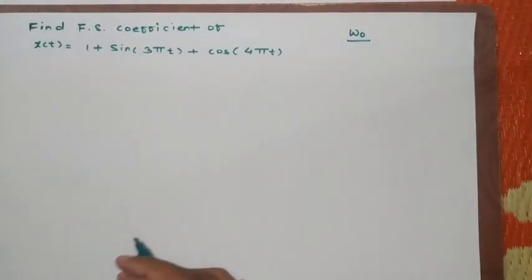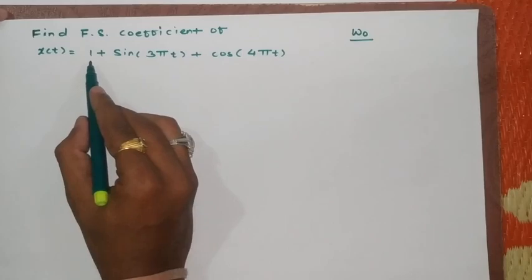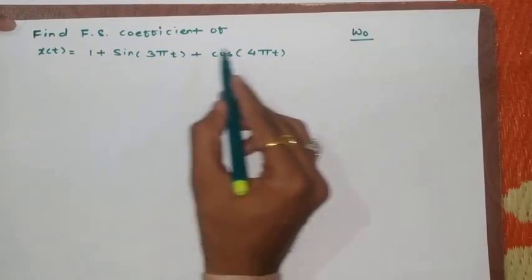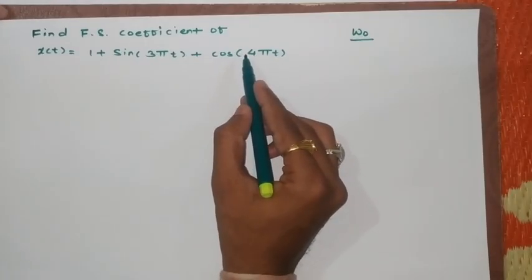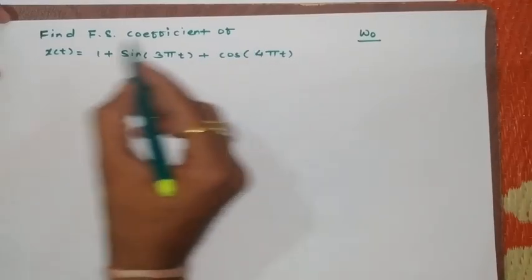Now in this case if you see we have a term as one which is DC, sine function and a cosine function but they have not mentioned the frequency component. So as far as such kind of examples are considered, when we are solving such kind of examples,